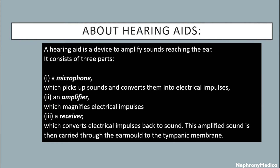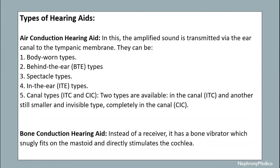This amplified sound is then carried through the ear mold to the tympanic membrane. Types of hearing aids include ear conduction hearing aids and bone conduction hearing aids. In air conduction hearing aids, the amplified sound is transmitted by the ear canal to the tympanic membrane.